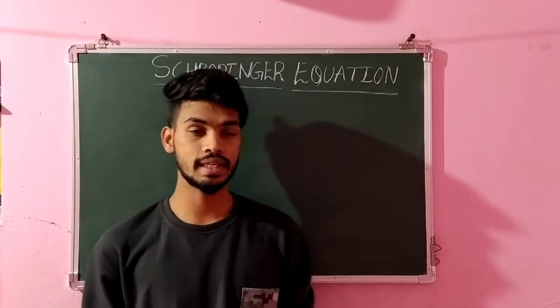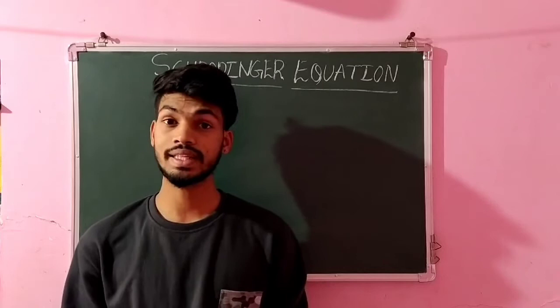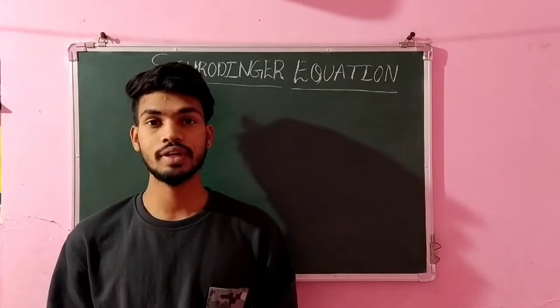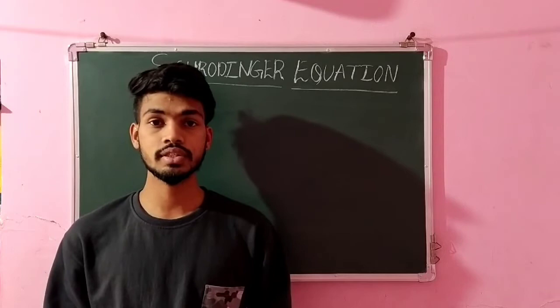So what is Schrödinger equation? Schrödinger equation is a linear partial differential equation that describes the motion or the dynamics of the quantum system. Or in other words, we can say that Schrödinger equation also describes the conservation of energy. In Schrödinger equation, there are two types. One is time-dependent Schrödinger equation and one is time-independent Schrödinger equation.